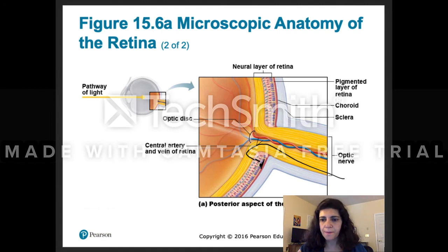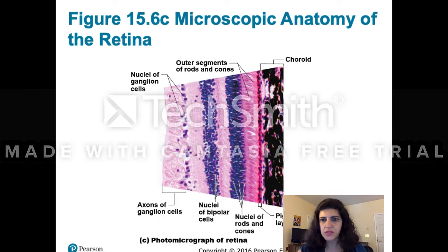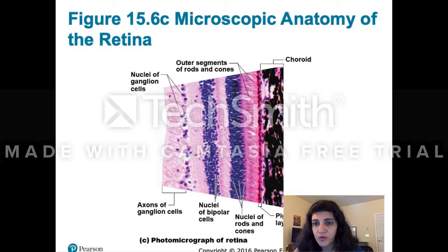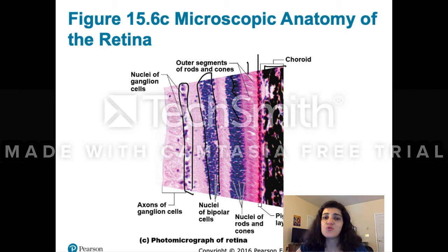Here is a slide of the real retina under the microscope. You can see the choroid, the pigmented layer, the layer with rods and cones, the nuclei of the rods and cones, the nuclei of the bipolar cells, and the nuclei of the ganglion cells. This slide is beautiful when we get to see it in the lab.